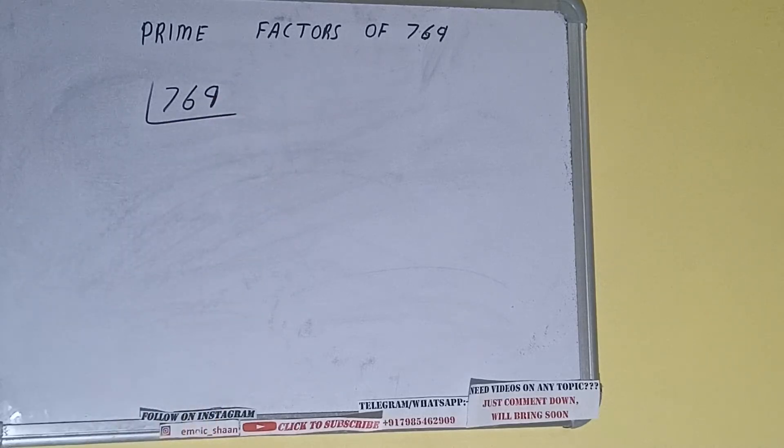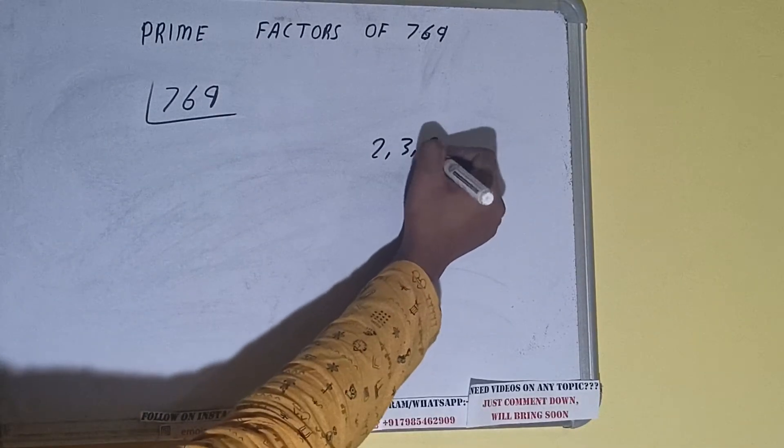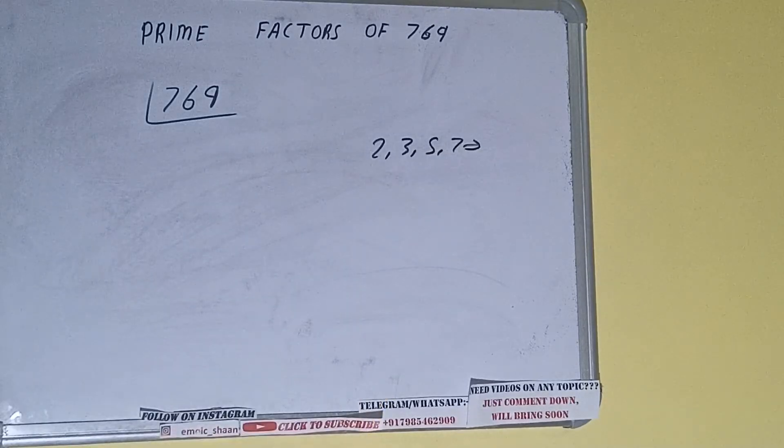The next thing we need to know about is what are prime numbers. So prime numbers are numbers that are divisible by 1 and the number itself, like 2, 3, 5, 7, and so on.